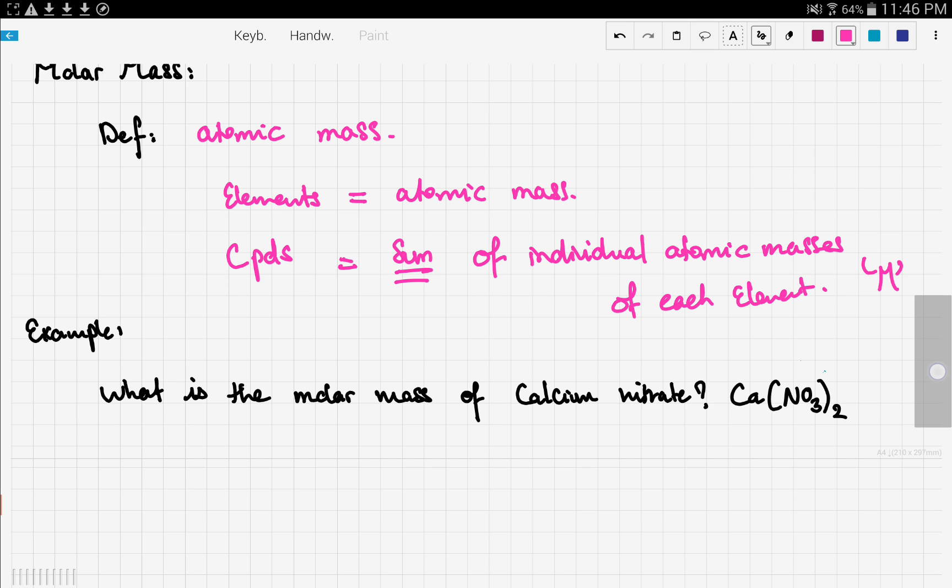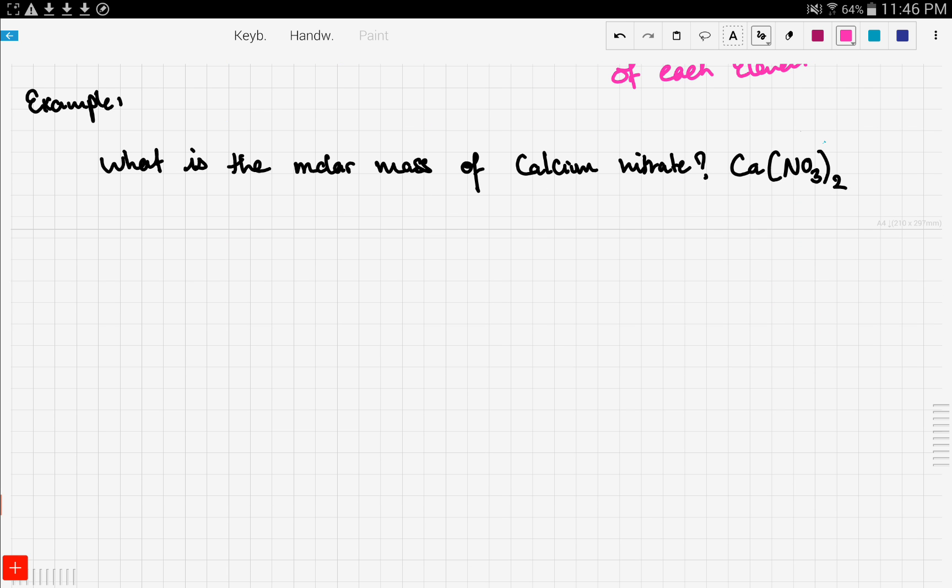Now let's demonstrate this by an example. Well it reads what is the molar mass of calcium nitrate. And the formula is right here. So the first step in order to solve such question. We have to get the molar masses of individual elements which is equal to the atomic mass.